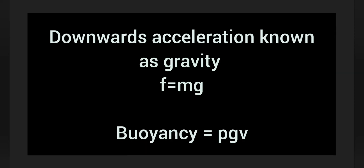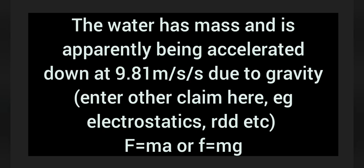Downwards acceleration, known as gravity: F equals mg. Buoyancy equals rho times g times v. The water has mass and is apparently being accelerated down at 9.81 metres per second squared due to gravity.